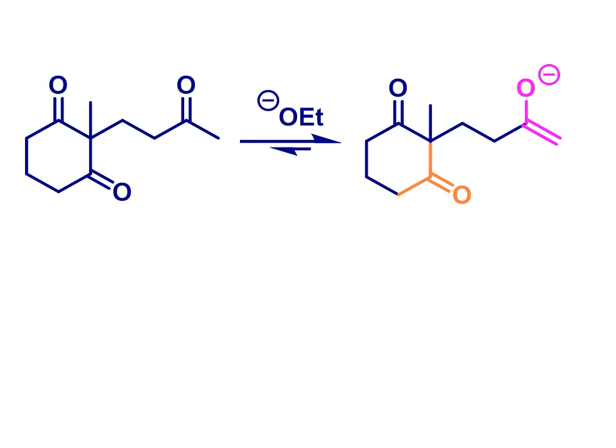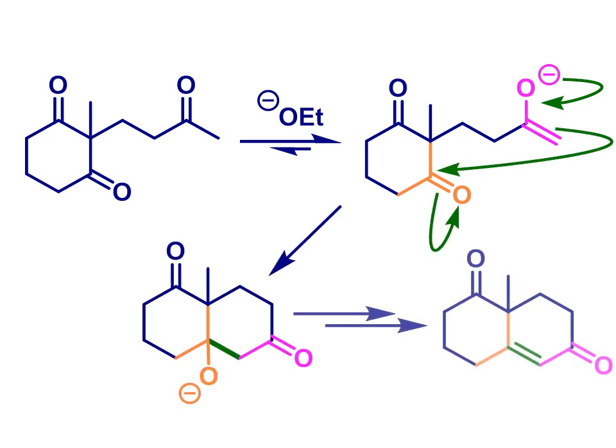Now envisage an aldol reaction between that enolate and the ketone colored orange, as shown here. This forms a new ring and initially an alkoxide species, which can protonate and eliminate water to give the enone product shown.